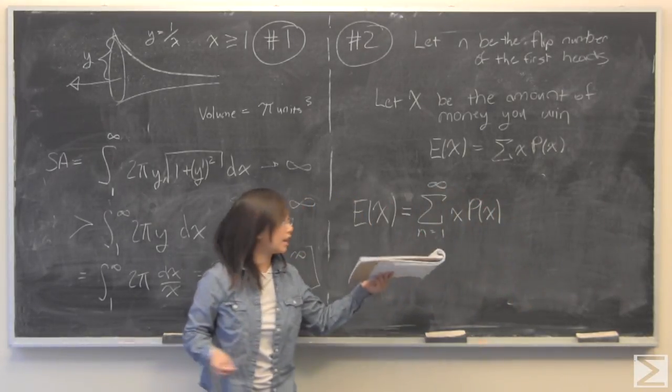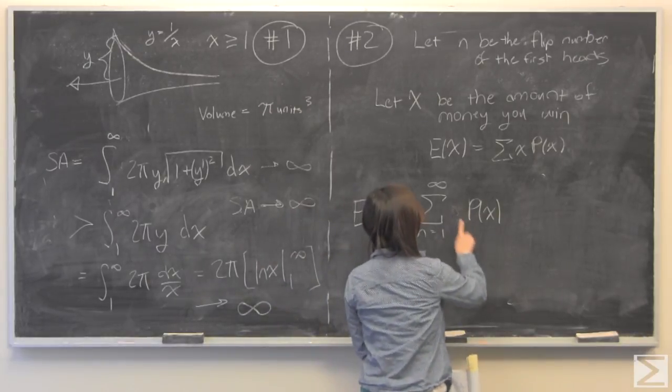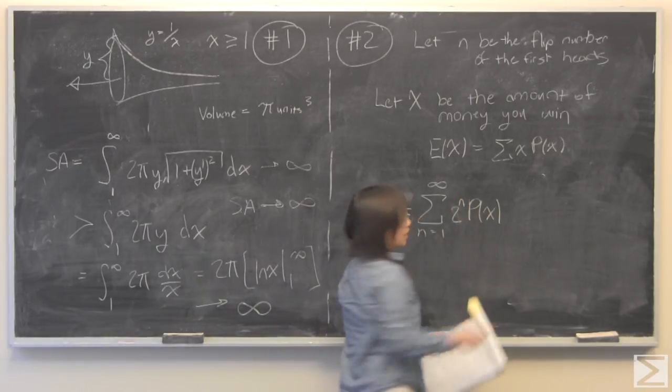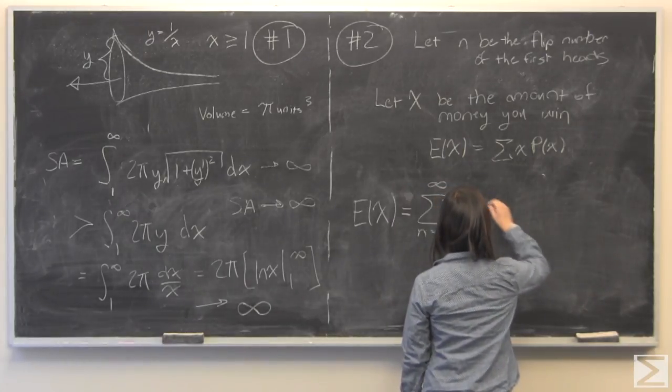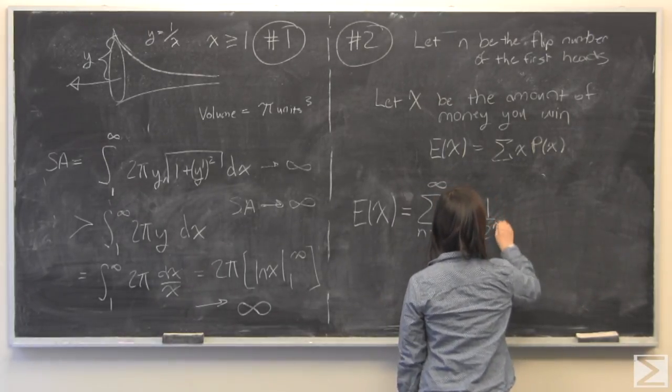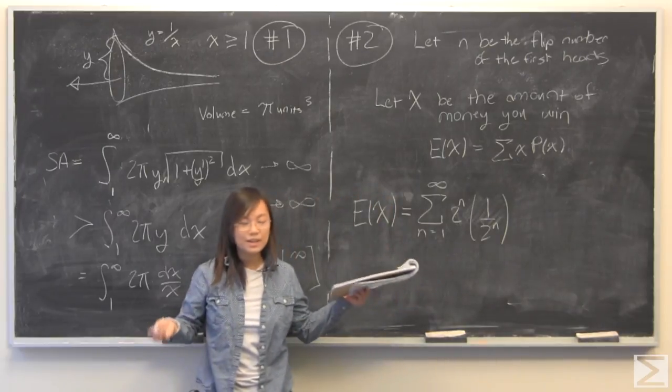But we have said that x, you're going to win two to the n dollars for each one. But the probability of x is going to be one divided by two to the n.